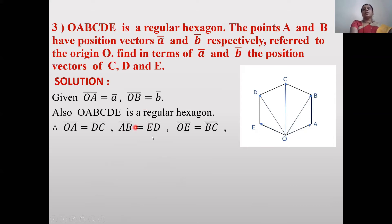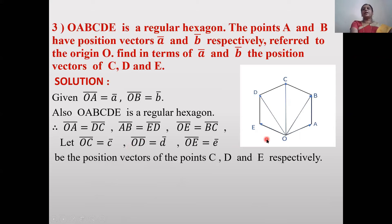Since OABCDE is a regular hexagon, OĀ = DC̄ (sides with same direction), ĀB̄ = ĒD̄, and OĒ = BC̄. Let c̄, d̄, ē be position vectors of points C, D, E respectively. So OC̄ = c̄, OD̄ = d̄, OĒ = ē.